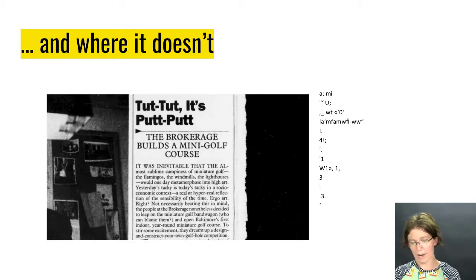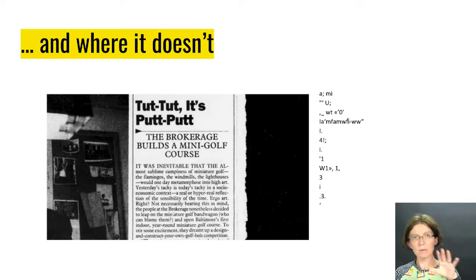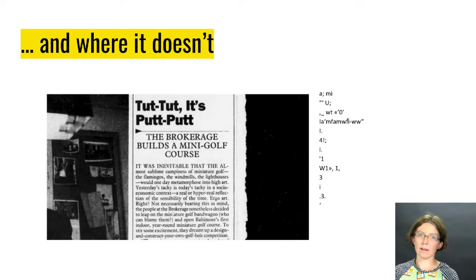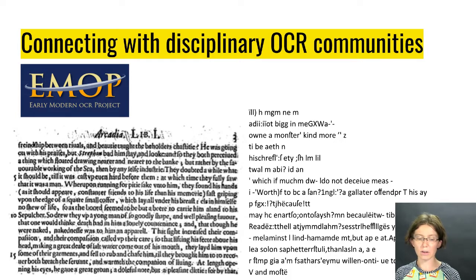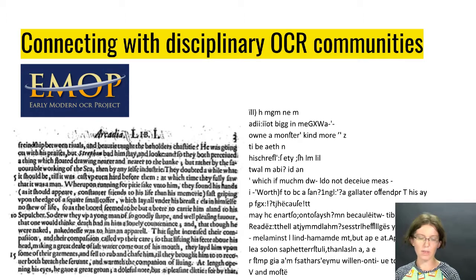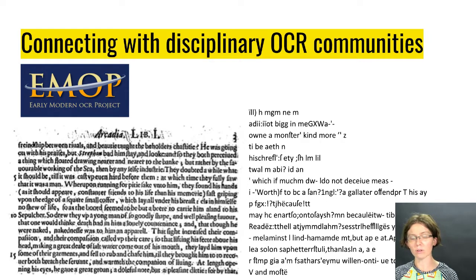Sometimes, though, it doesn't work at all. Here's another newspaper article that looks really similar, except there's an image on the left and a black bar on the right, and Tesseract just really didn't know what to do with that. It's also possible to connect with disciplinary OCR communities. There was a Mellon-funded project — the Early Modern OCR project, or EMOP — that developed some training sets for Tesseract for early modern texts. In this case, the image on the left just had too many speckles, too much dirt — it wasn't clear enough to really take advantage of that OCR training set, but it did a reasonable job catching some things that it wouldn't have caught with the default training set.